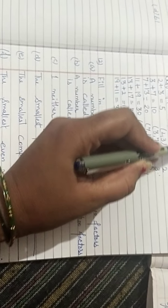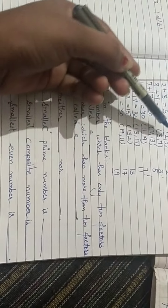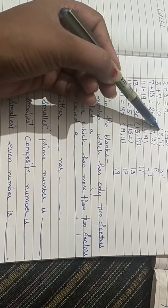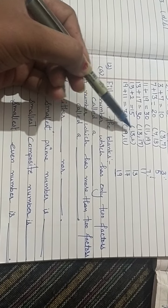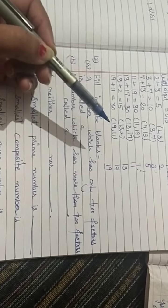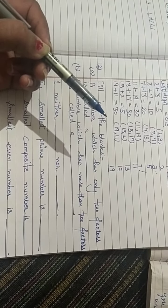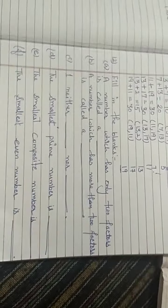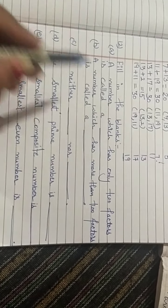We need 5 pairs of prime numbers. These all are primes. Count: 1, 2, 3, 4, 5, 6, 7. These are 7. You choose any 5 and write the answer. Next question is filling the blanks.